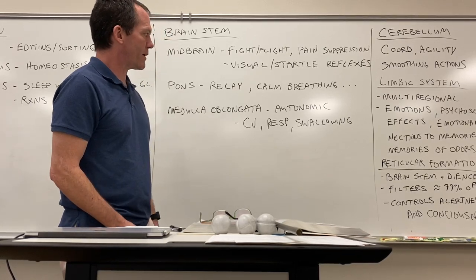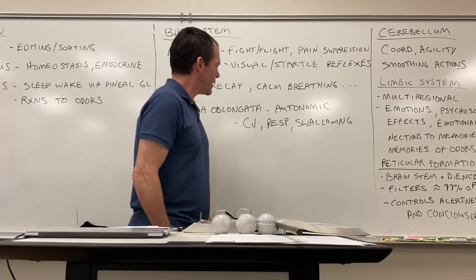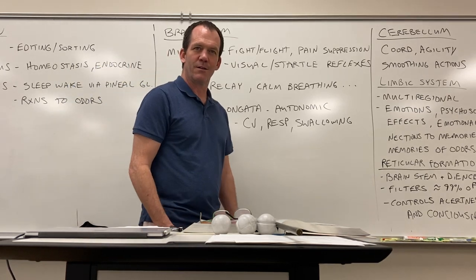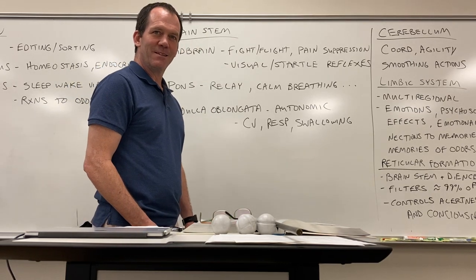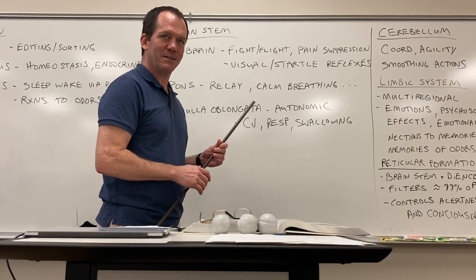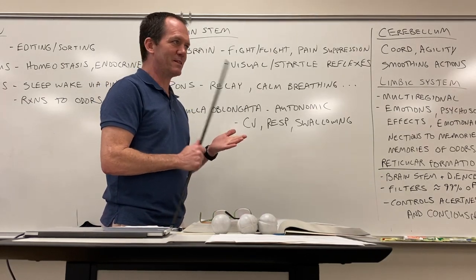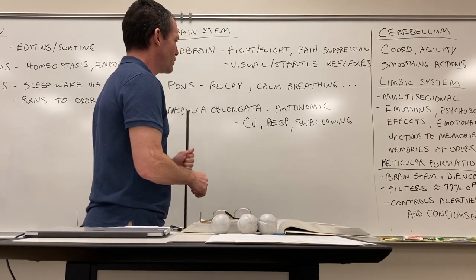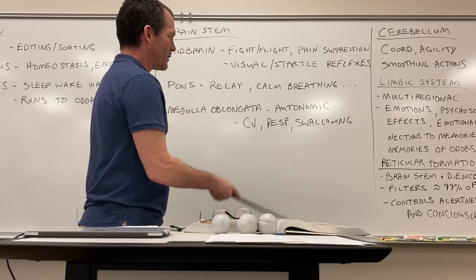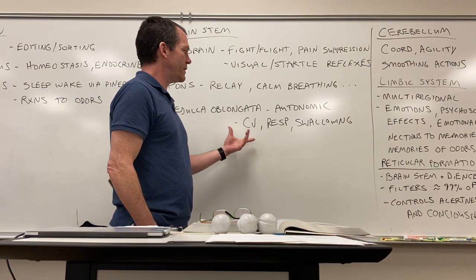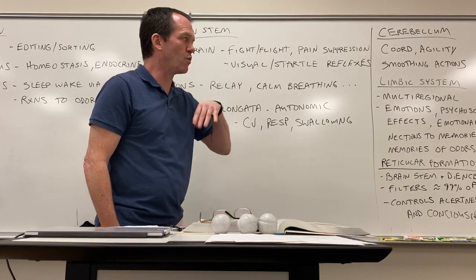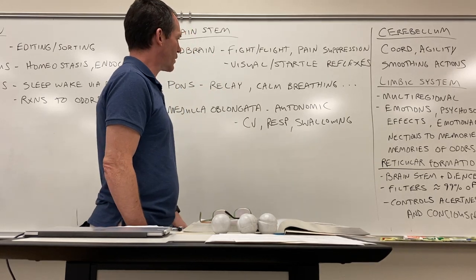The medulla oblongata is an autonomic nervous system controlling region. It controls cardiovascular function, respiration, peristalsis, and swallowing.